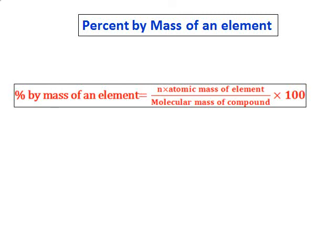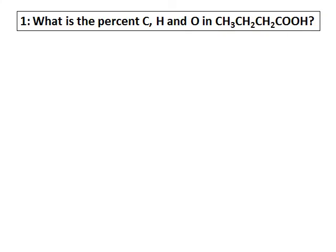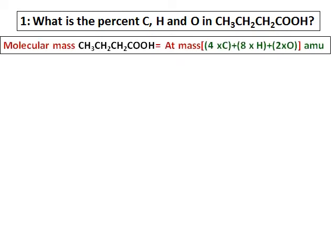We will learn the next topic: percent by mass of an element. The formula is: percent by mass of an element equals the number of atoms times the atomic mass, divided by the molecular mass of the compound, times one hundred.